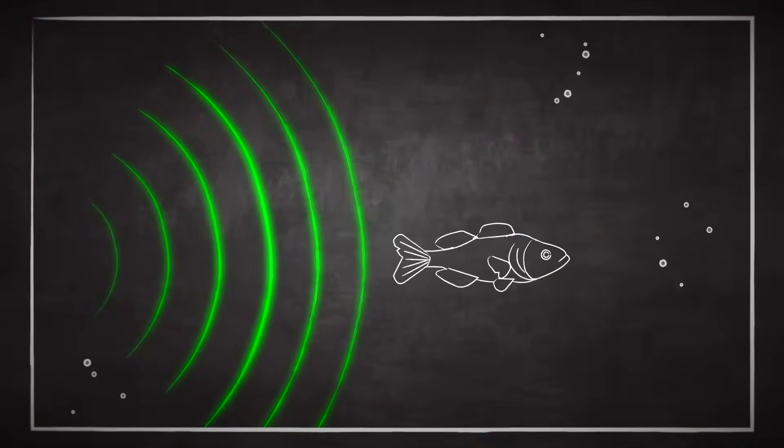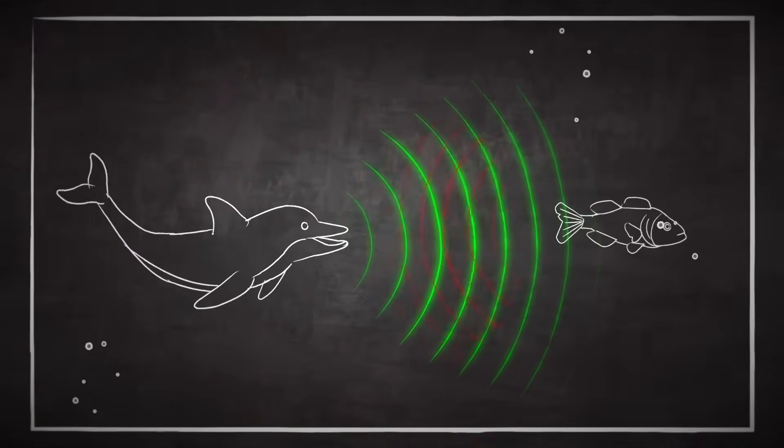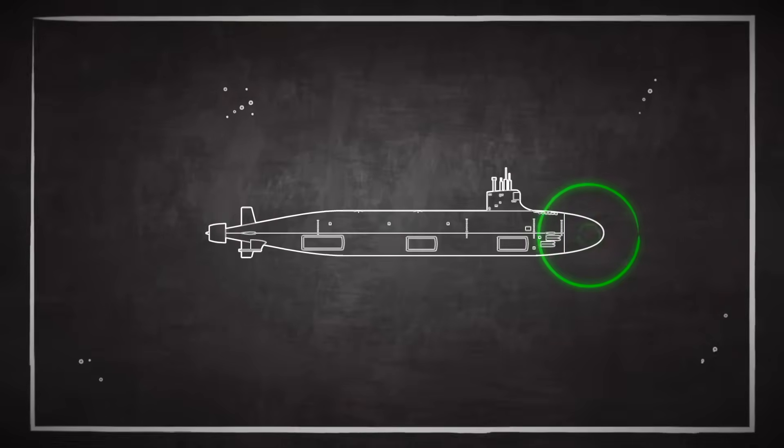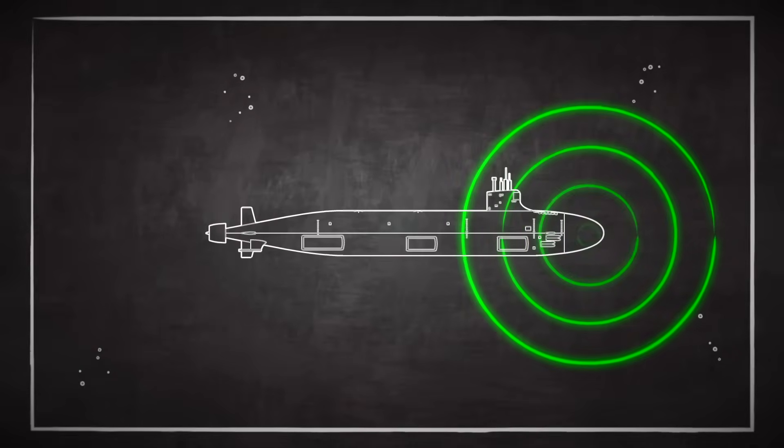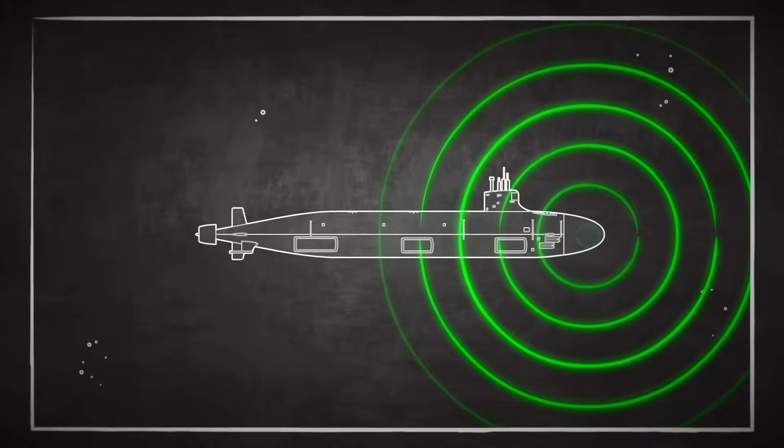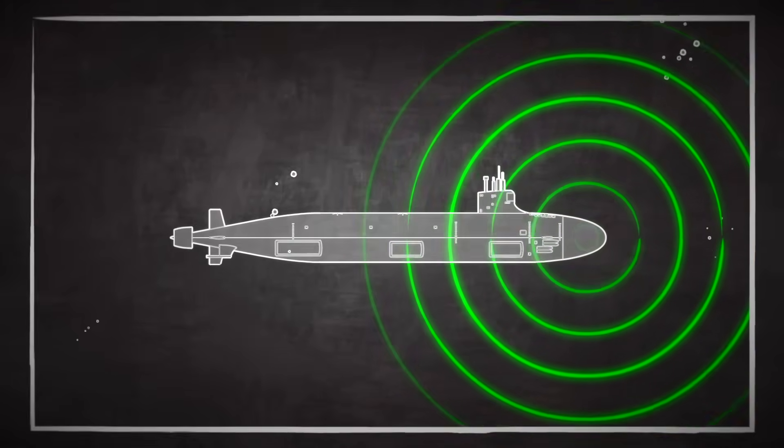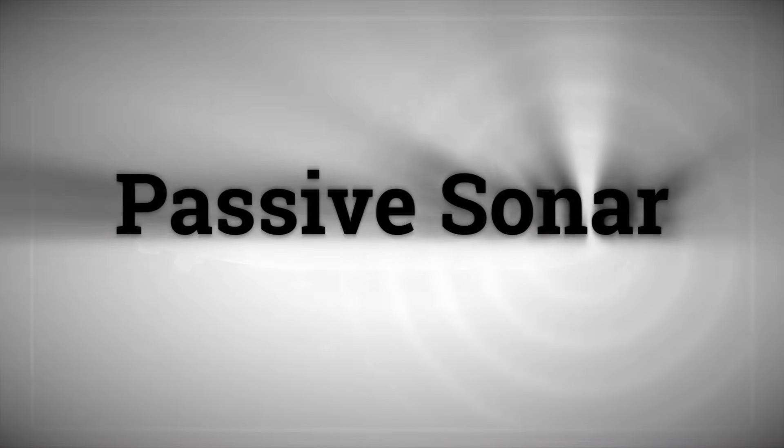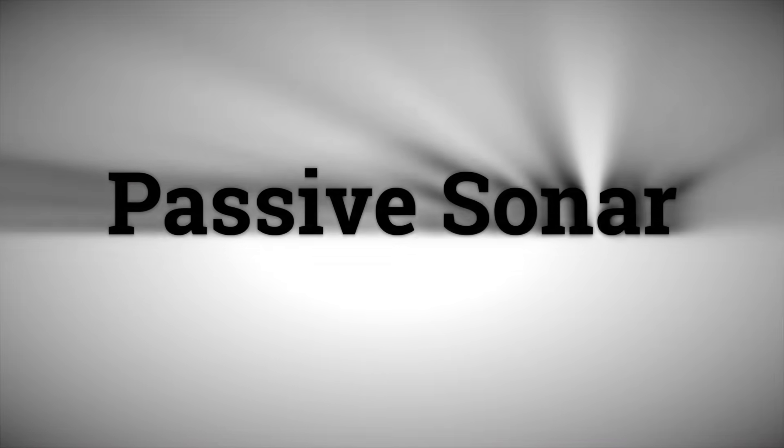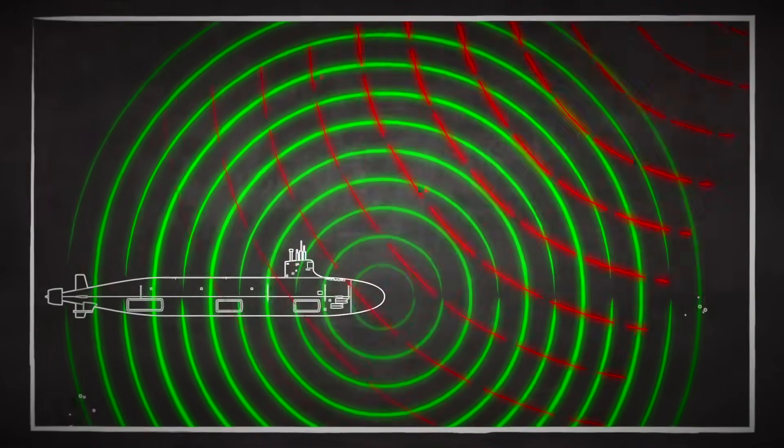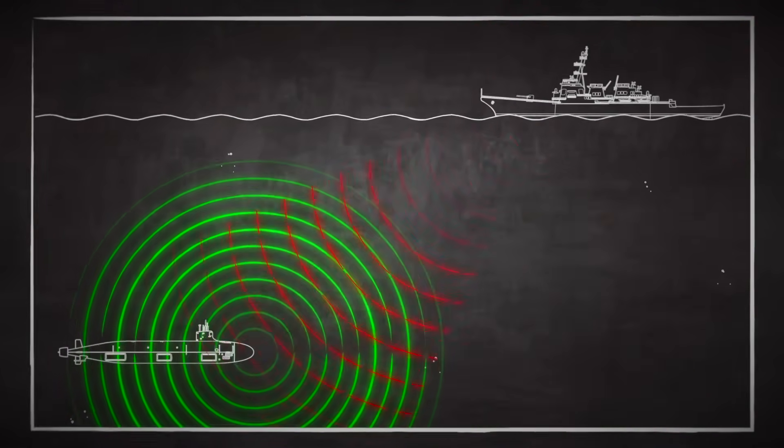When a dolphin chirps in the ocean, it gives away its location. Similarly, a submarine using active sonar does the same thing. That loud, artificial ping travels through water faster and farther than most sounds. For other submarines or surface ships listening with passive sonar, that ping is like turning on a flashlight in a pitch-black room. It announces your presence to anyone nearby, including the enemy.